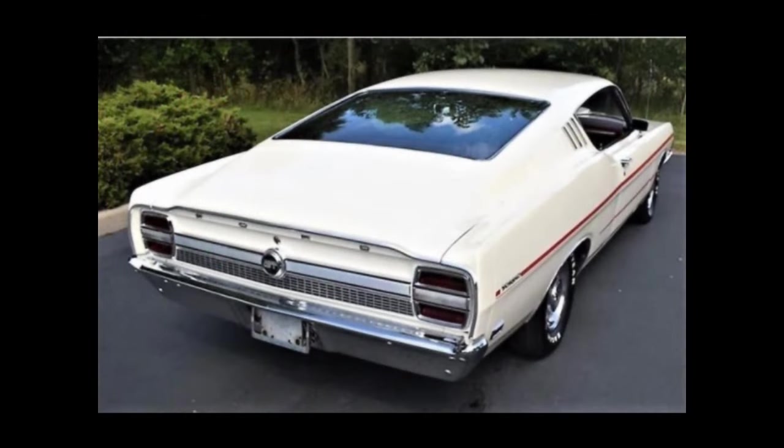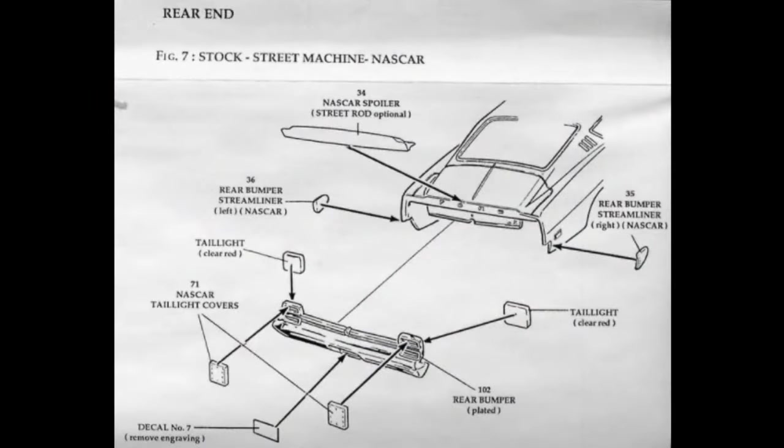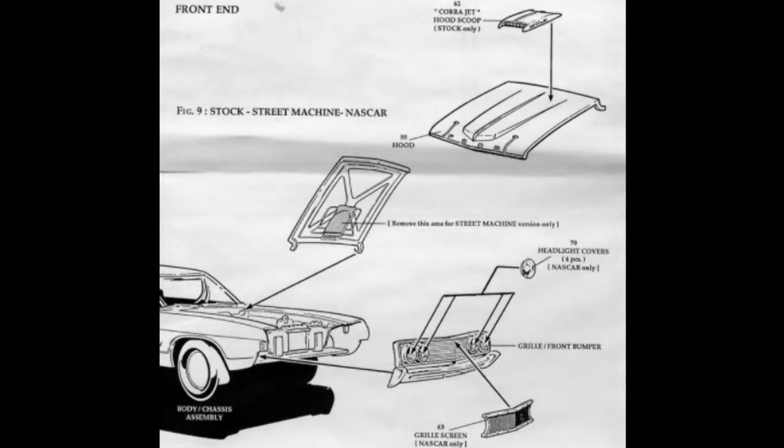While some kits, like the 2002 RC2 and most recent 2022 Round 2 offering, include the accurate Torino grille. For the NASCAR option, AMT added the rear spoiler, rear bumper streamliner side fill panels, and taillight covers while adding headlight covers and a grille screen up front.